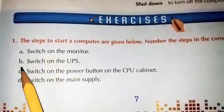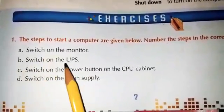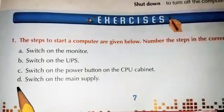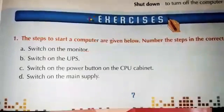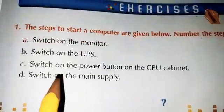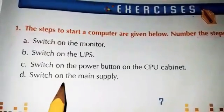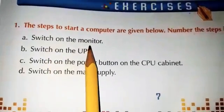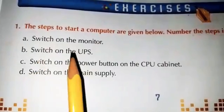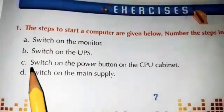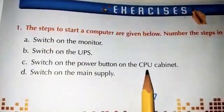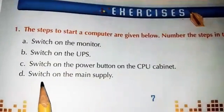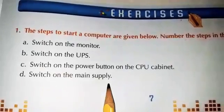The steps are: A — Switch on the monitor. B — Switch on the UPS. C — Switch on the power button on the CPU cabinet. And D — Switch on the main supply. Now tell me, what is the first step to start a computer? Should we switch on the monitor first, the UPS first, the power button on the CPU cabinet, or switch on the main supply?